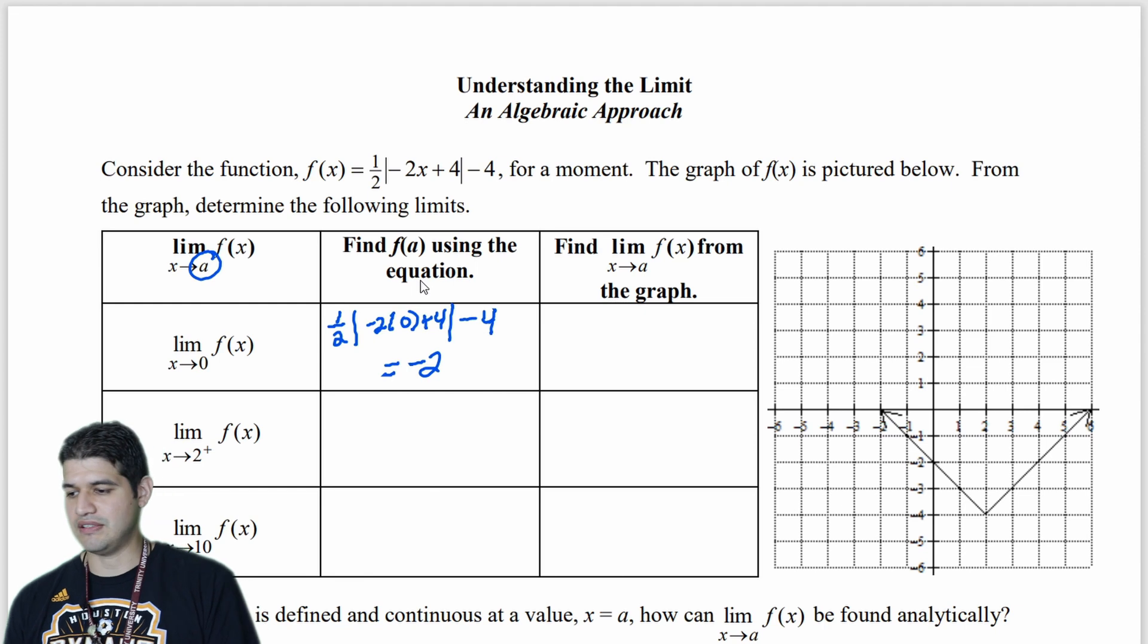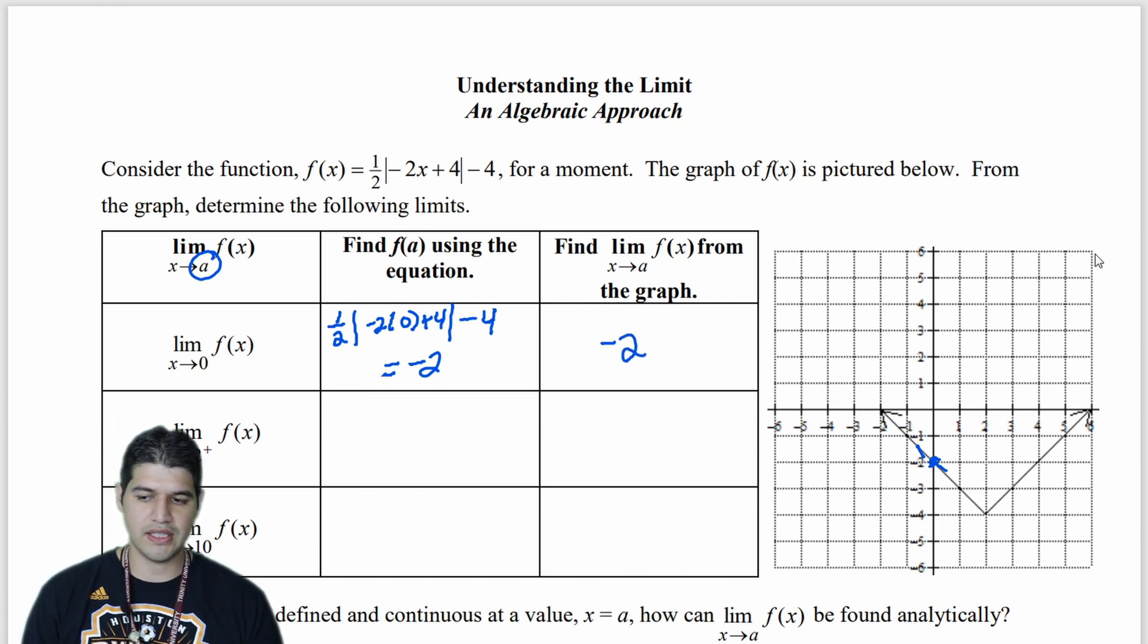Now let's look at it from the graph. So I'm looking here at a graph, and f of a using the equation. So I'm looking at f approaching 0. So 0 is right here, and I want to approach it from both the left side and from the right side. Well, right here, it looks like that y value that I tend to go to comes out to be negative 2. So now let's move on to our next section.